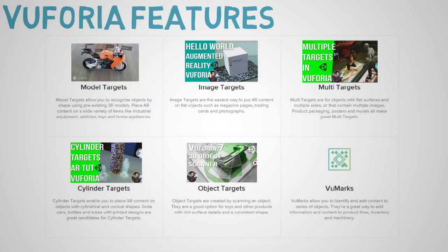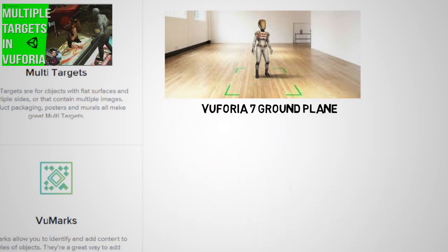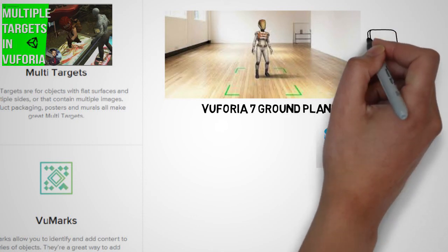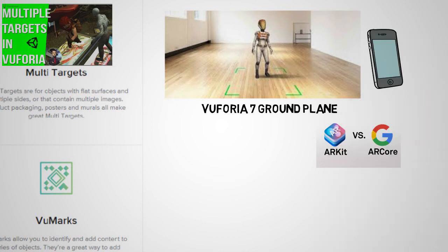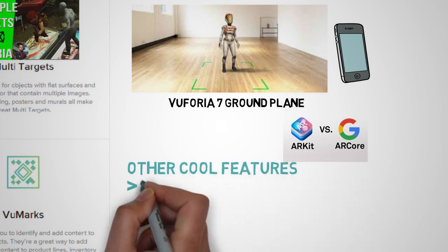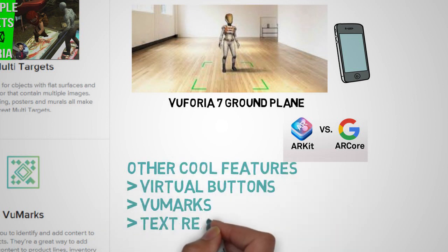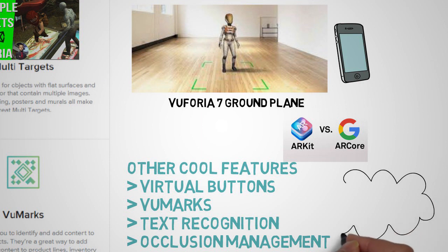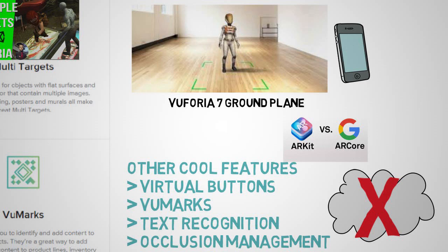Another new feature in Vuforia 7 is ground plane, which puts Vuforia on the same plane — pun intended — as Apple's ARKit and Google's ARCore. Ground plane functionality allows you to attach content to horizontal surfaces such as floors and tables. The reason they released this feature is not to compete with ARKit or ARCore, but to extend it to as many devices as possible, since both Apple and Google have restricted ground plane technology to only the latest devices such as iPhone 6S and higher, Pixel 2, and Samsung S8 and higher. Other cool features in Vuforia include virtual buttons, view marks, text recognition (which may be deprecated in later versions), occlusion management, and cloud recognition, which enables developers to host and manage image targets online.